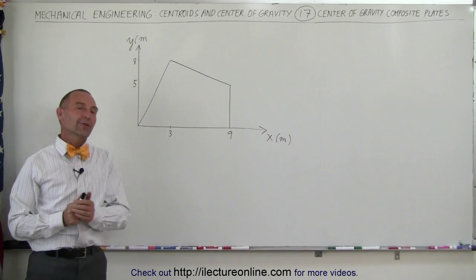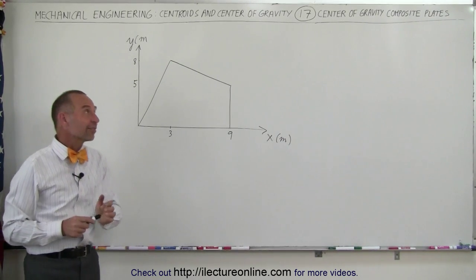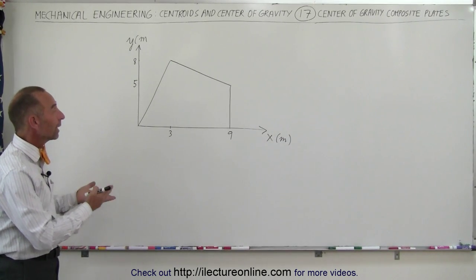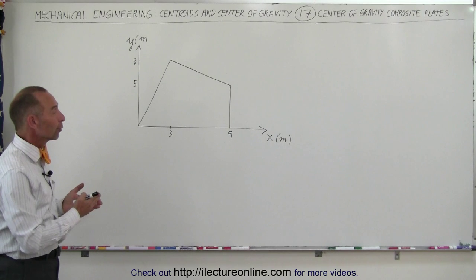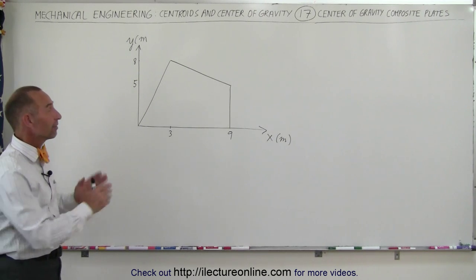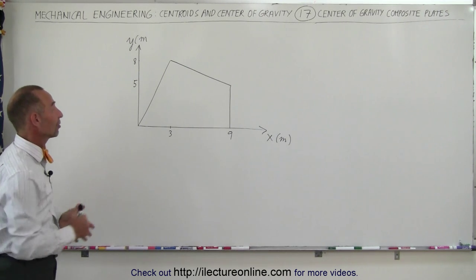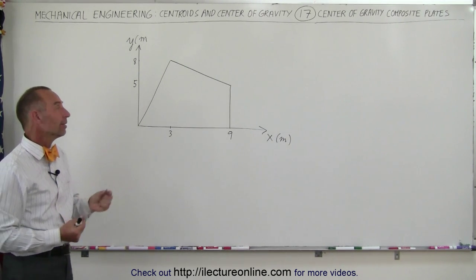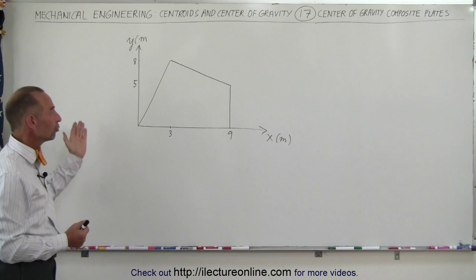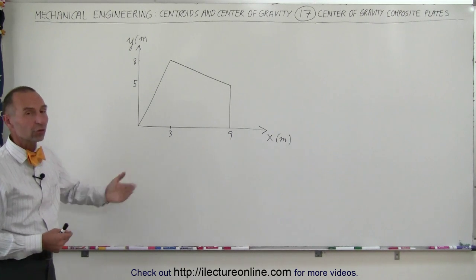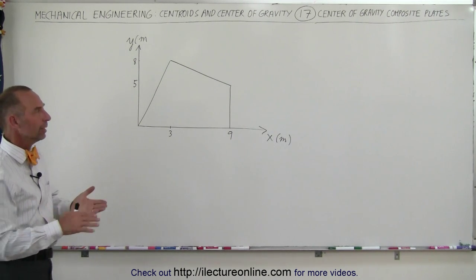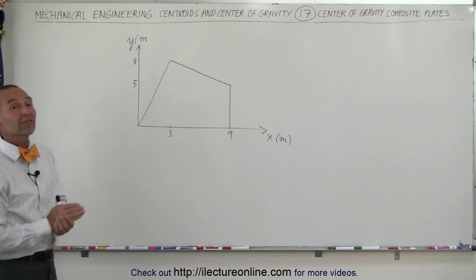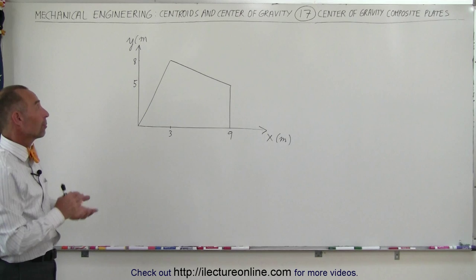Welcome to ElectronLine. Here's our second example of how to use composite plates in order to find the center of mass of this strange contraption. Let's say this is a thin plate, a certain thickness, uniform in thickness, uniform in density, so we can use area to find the center of mass.